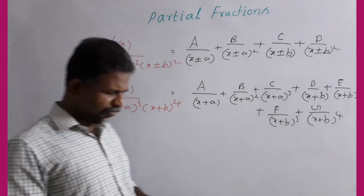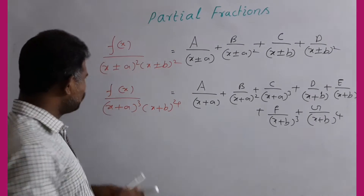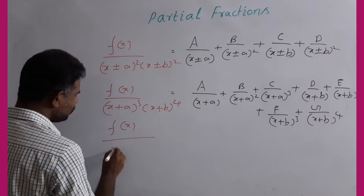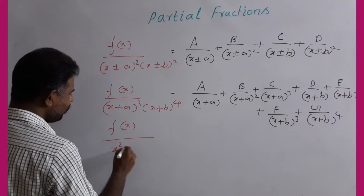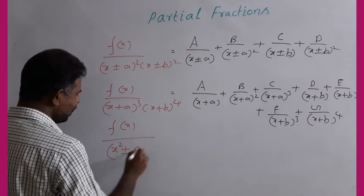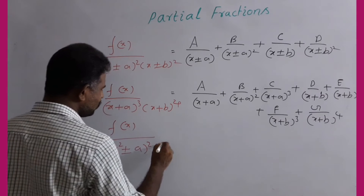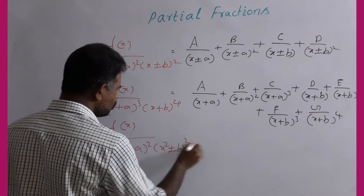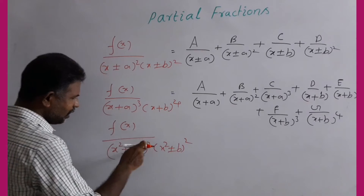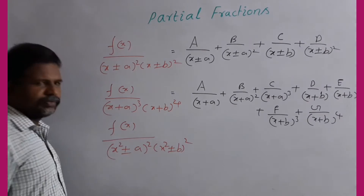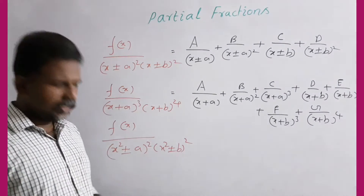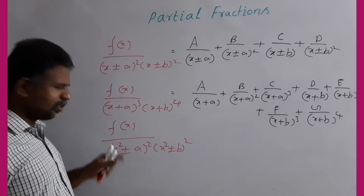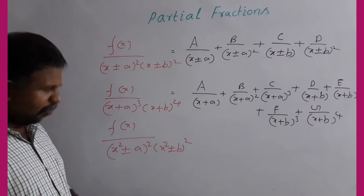In the case of f(x) divided by (x² + r − a)² times (x² + r − b)², we have square times square factors. I will explain the square and square case.